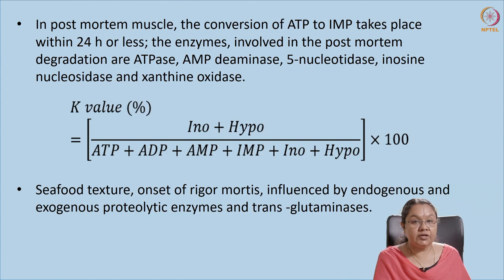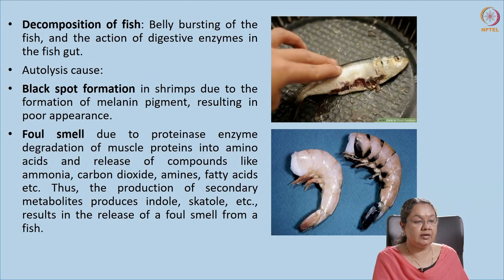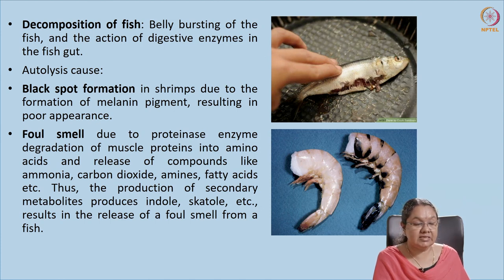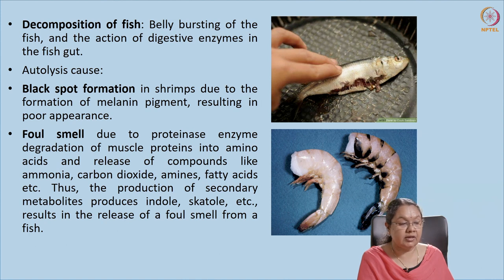When the fish is killed or captured it enters rigor mortis. Both exogenous and endogenous enzymes are involved in rigor mortis, particularly proteolytic enzymes and transglutaminases, which help in the formation of rigor. Belly bursting is yet another activity related to enzymatic degradation, where digestive enzymes degrade the belly part. This is commonly seen in sardines, where the belly gets burst and the gut contents come out.